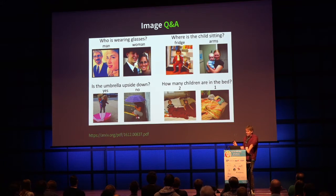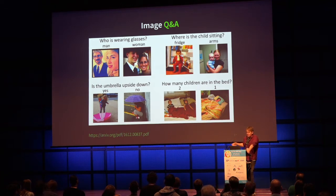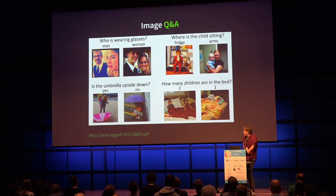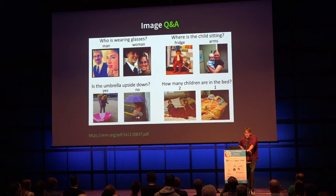Image QA is one step more advanced than image captioning. You train a model on images with question-answer pairs, and it generalizes — it's not just memorizing. For example, usually bananas are yellow, so a memorizing model would say yellow. But in one paper's example, the bananas in the image were unripe and green, and the model got it right.